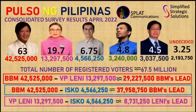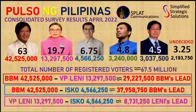Let us now compute for the estimated vote leads of the first to third-ranked presidential candidates. With simple subtraction of their estimated votes, former Senator Ferdinand Marcos Jr. leads VP Lenny Robredo with 29,227,500 votes. BBM leads Mayor Isco with 37,958,750 votes, while VP Lenny leads Mayor Isco with 8,731,250 votes.